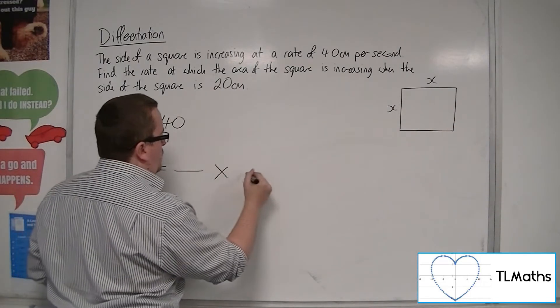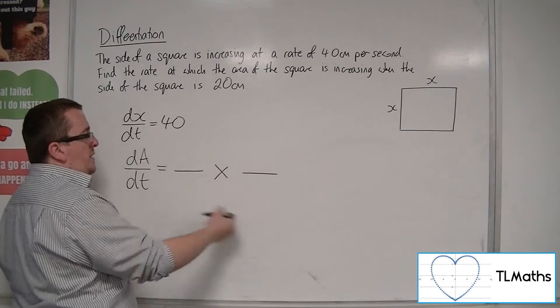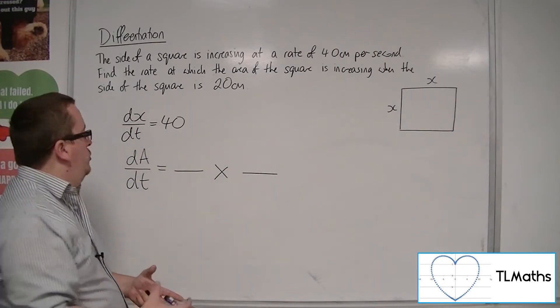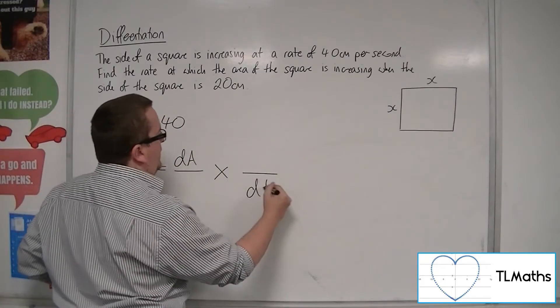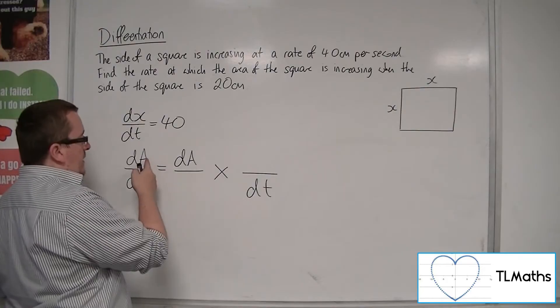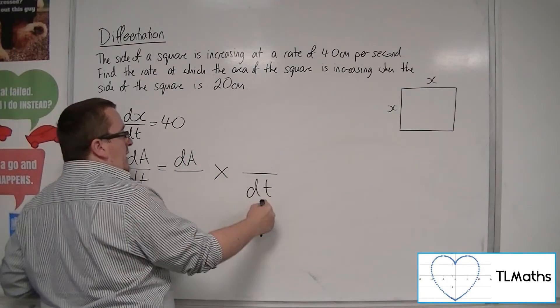So the chain rule is governed by the product of two rates of change. I'm going to build up these two by first placing in the dA and the dt. Okay, so dA/dt, dA goes there, dt goes there.